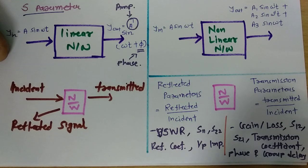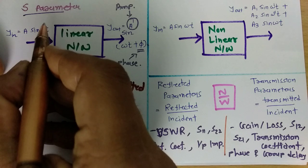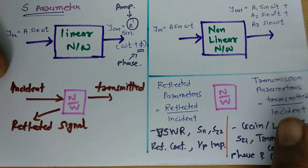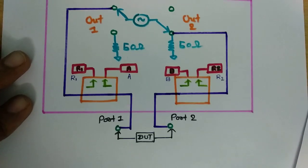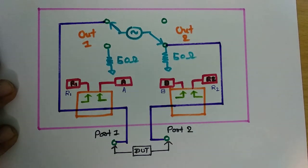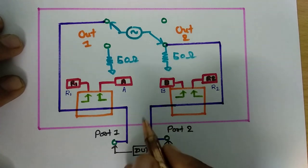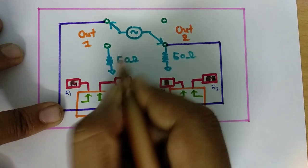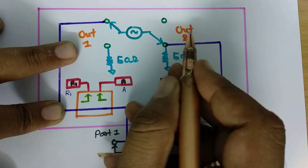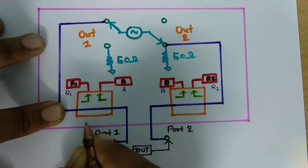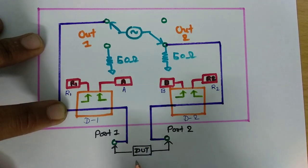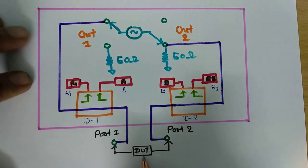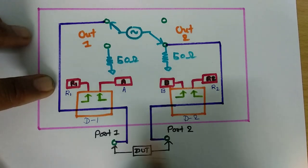Practically, the characteristics of a linear network are calculated using scattering parameters, which we analyze with a vector network analyzer. Here is the block diagram of the vector network analyzer. We have 50-ohm impedances connected at OUT1 and OUT2, two directional couplers — directional coupler 1 and directional coupler 2 — and between port 1 and port 2 we connect the DUT, the device under test.